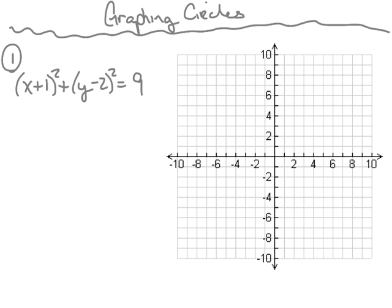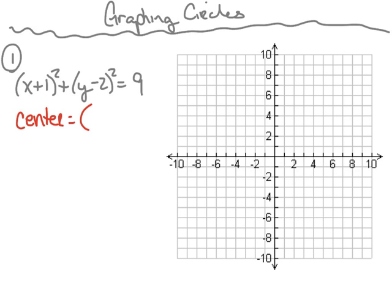Here's our first example. We've got the equation x plus 1 squared plus y minus 2 squared equals 9. The first thing we're going to do is find the center, and in order to find the center we're going to use h and k. h would be the opposite of positive 1, which is negative 1. k would be the opposite of negative 2, which is positive 2. Therefore, the center of our circle is going to be at the ordered pair negative 1, positive 2, which is right here.